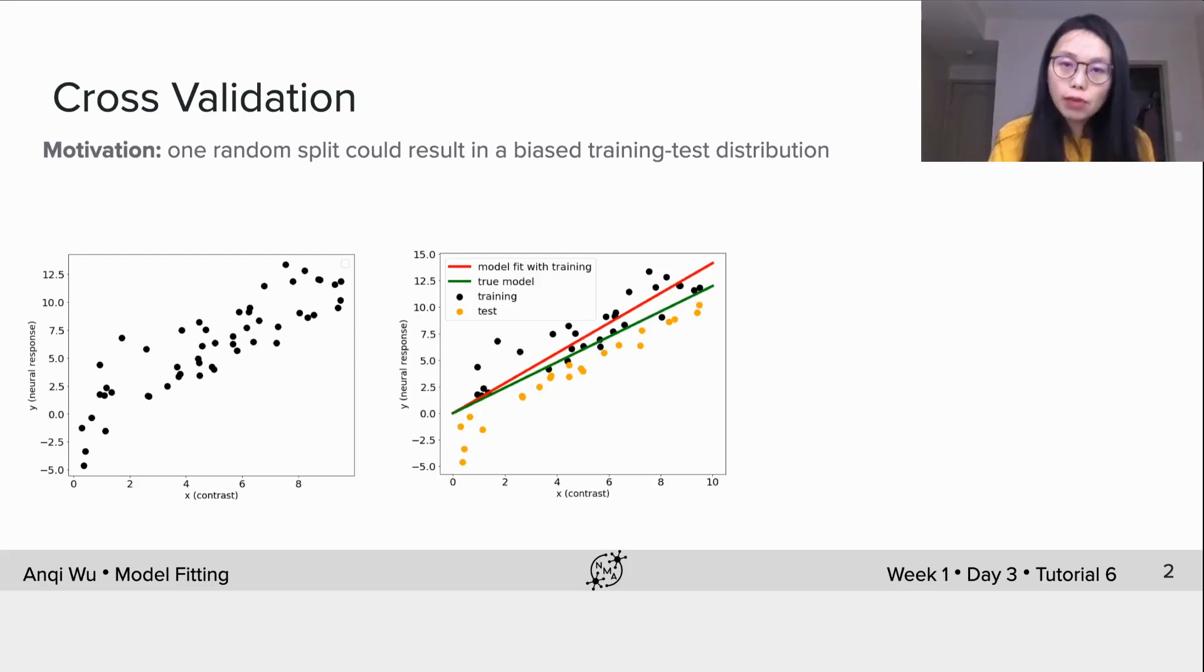The black dots are for training and the yellow dots are for test. The green line is the true model, while the red line is the model fit using the training set. We can see the model fit doesn't match the true model very well, so the model evaluation given such a split won't be very trustable. We want to get rid of such type of randomness induced by the splitting procedure.